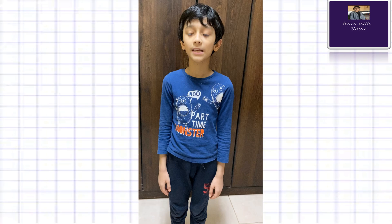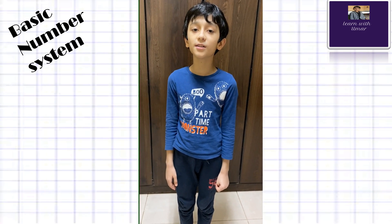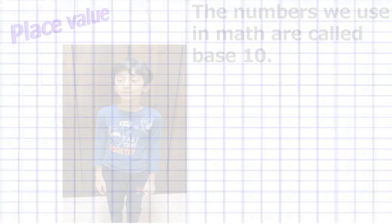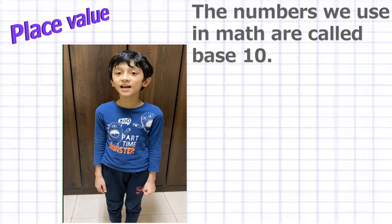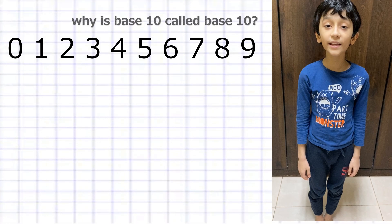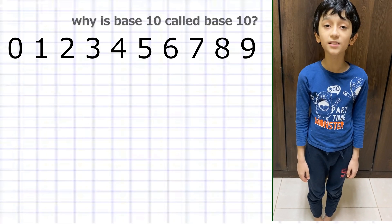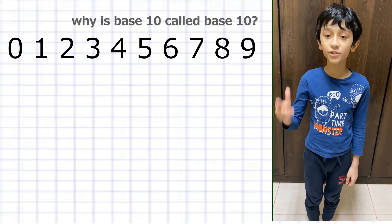Hello. Today we are going to talk about a very important math concept called place value. The numbers we use in maths are called base 10. Why is it called base 10? Because there are 10 numbers in base 10: zero, one, two, three, four, five, six...